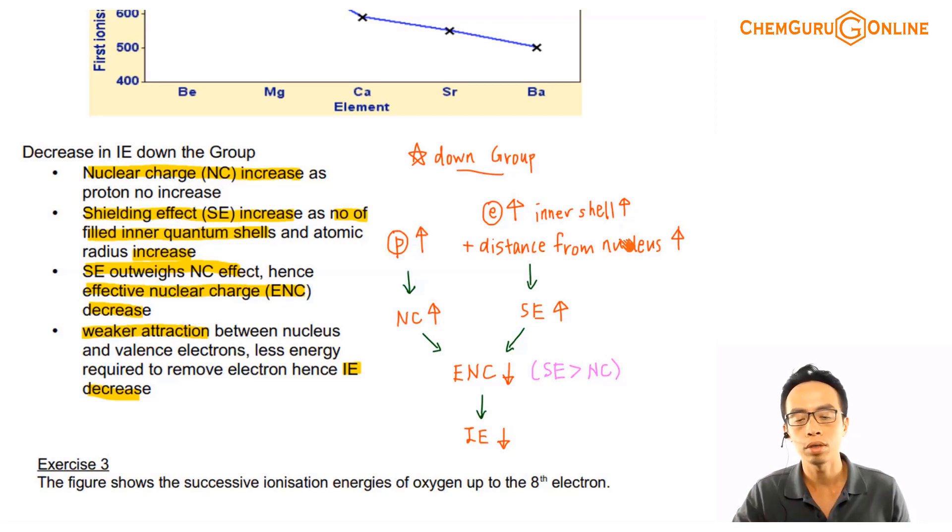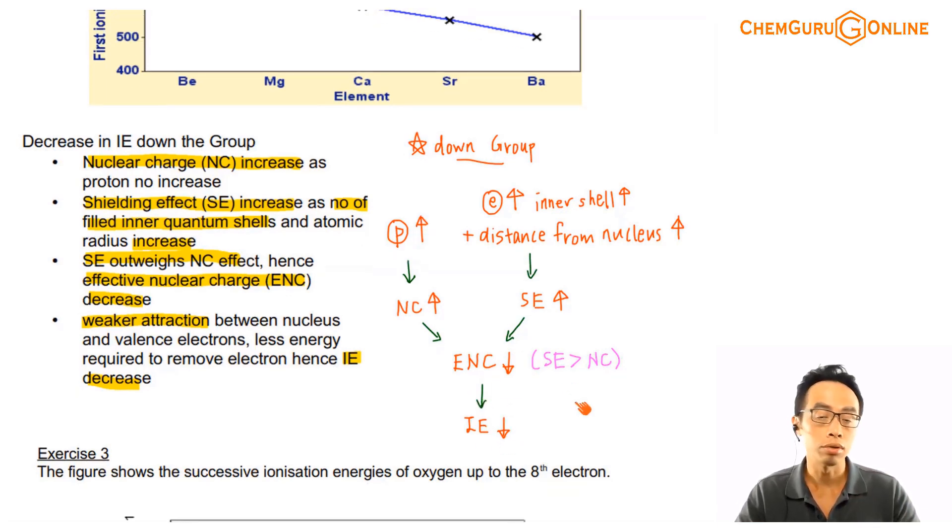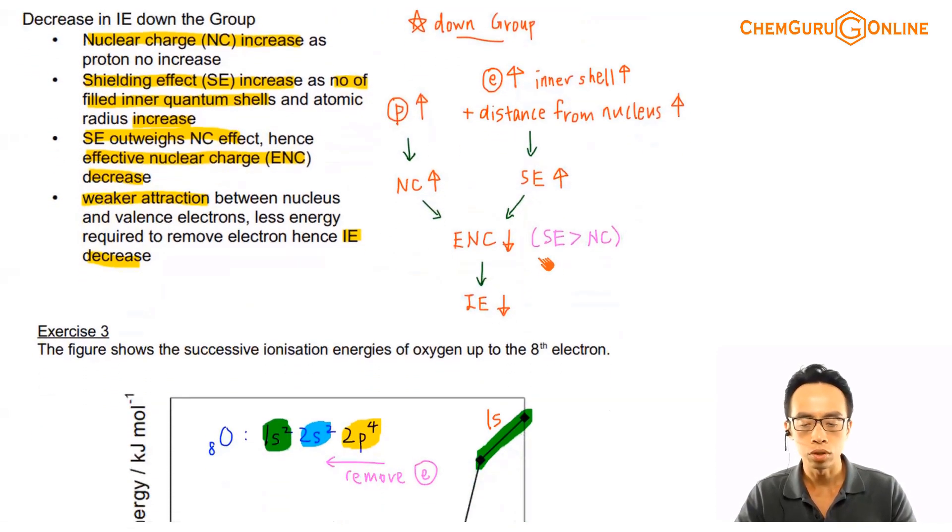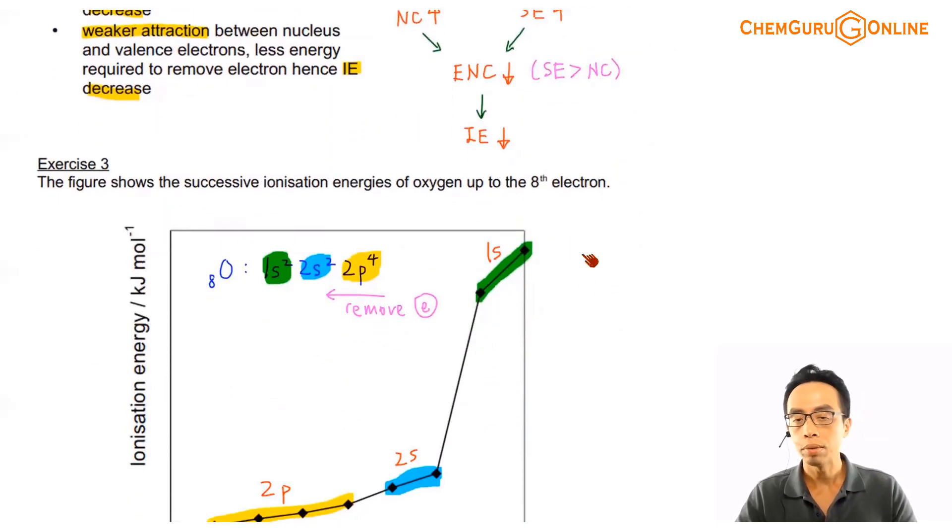So overall, effective nuclear charge will decrease, which will result in a smaller ionization energy as you go down the group. Alright, so first ionization energy trend down the group. I think it's also pretty simple. We do also need to keep this in mind.